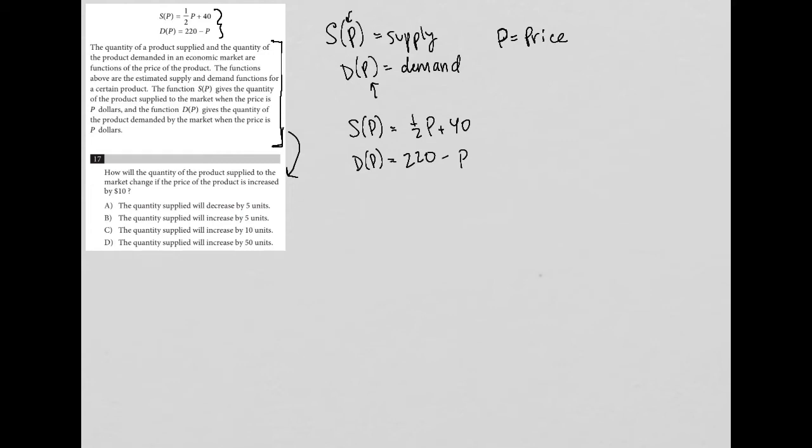Question 17 says: How will the quantity of the product supplied to the market change if the price of the product is increased by $10? This increase by $10 part can be a little bit tricky on this test, but here's how you deal with it.